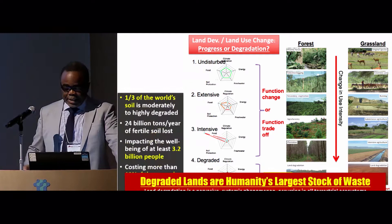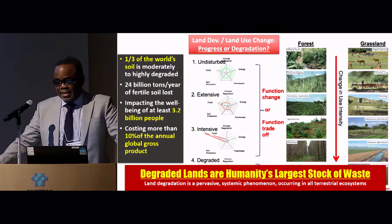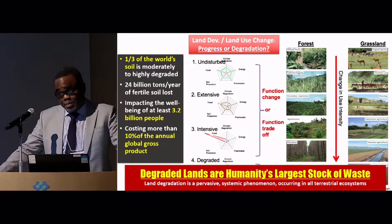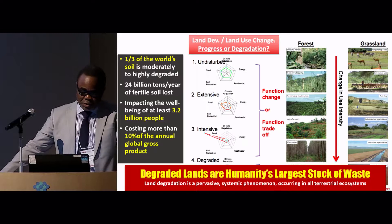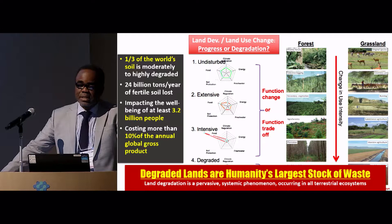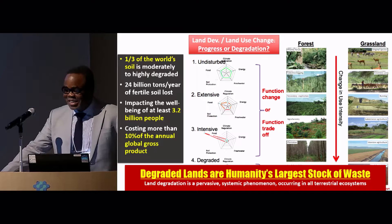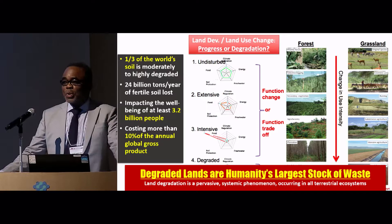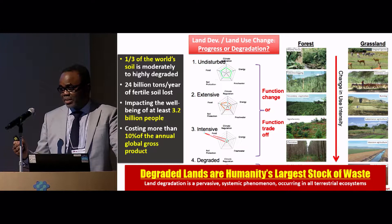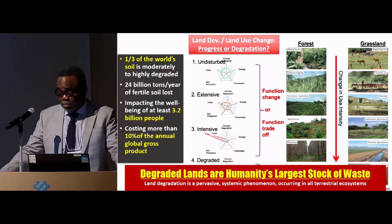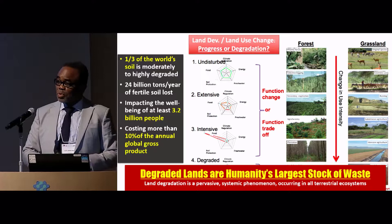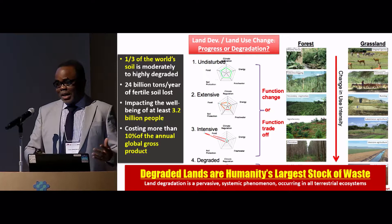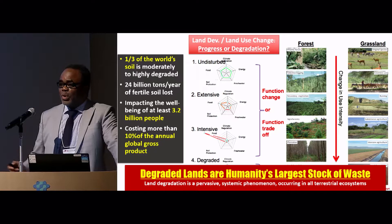Earlier this year, IPBES released its land degradation and restoration assessment — I really encourage you to peruse that report. It says that one third of the world's soil is degraded, and it's still not yet in the circular economy discourse. 24 billion tons of topsoil is lost every year, mostly due to erosion, impacting 3.2 billion people and costing 10% of the annual gross product of the planet.